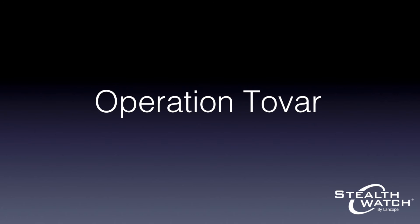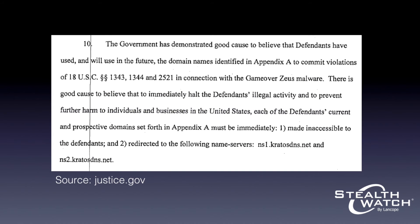Operation Tovar, the disruption operation led by the US government, attempted to cripple the C2 infrastructures used by both Game Over and Cryptolocker. In both cases, the government and partners were able to make domains used by the matching malware inaccessible to the malware's controllers. In the case of Cryptolocker, making the domains inaccessible prevents new infections from actually beginning the encryption process, but in the case of Game Over, a bit more needed to be done. In addition to making the domain names inaccessible, the domains now point to government-controlled DNS servers. This allows the government to not only disrupt the DGA-based communication, but also attempt to poison future peer-to-peer communication.